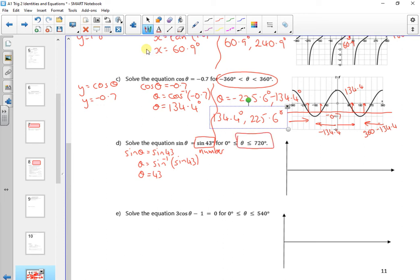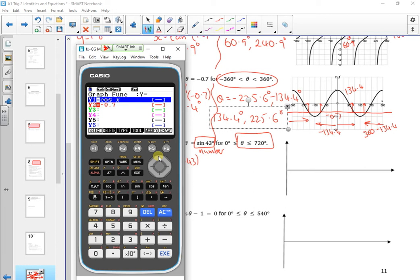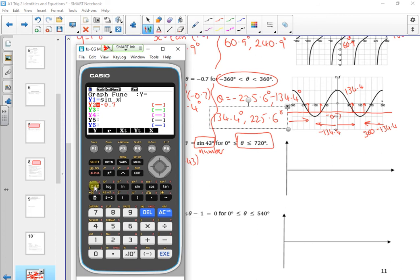So let's get a picture then. So if I do, change that to sine. So sine x. So I'm looking where sine x, missed the x, is equal to sine of 43.